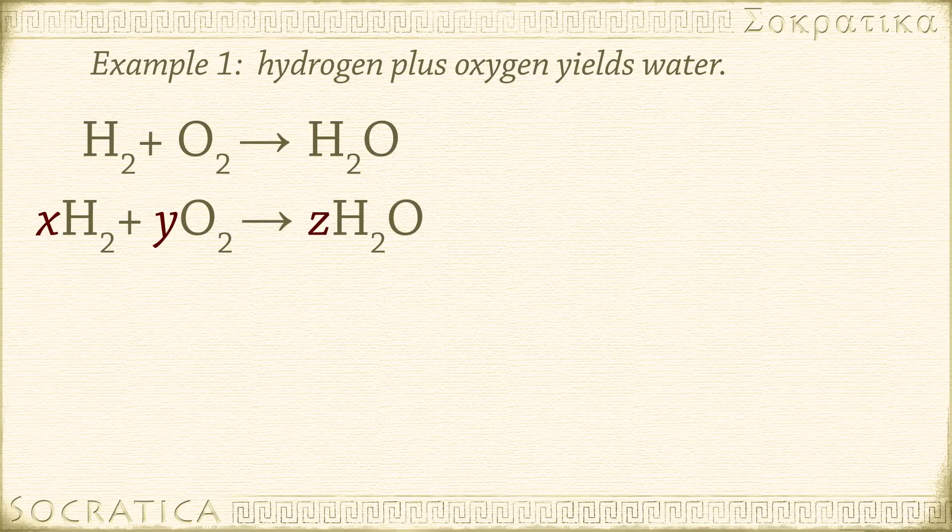We can use the chemical reaction to establish some algebraic relationships. For instance, how many hydrogen atoms are there? We know the number of hydrogen atoms on the left must equal the number of hydrogen atoms on the right. So, 2X equals 2Z. Do you see where those 2's came from? That's right, the subscripts. H2 on the left, H2O on the right. Now, let's do the same for oxygen. The number of oxygen atoms on the left equals the number of oxygen atoms on the right, so 2Y equals Z. Again, I got that 2 in front of the Y from the subscript 2 in O2. Those are the relationships we know about these variables.